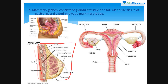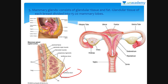The tubules of each lobe join to form a mammary duct. Several mammary ducts join to form a wider mammary ampulla. The mammary ampulla is connected to the lactiferous duct through which milk is sucked out.